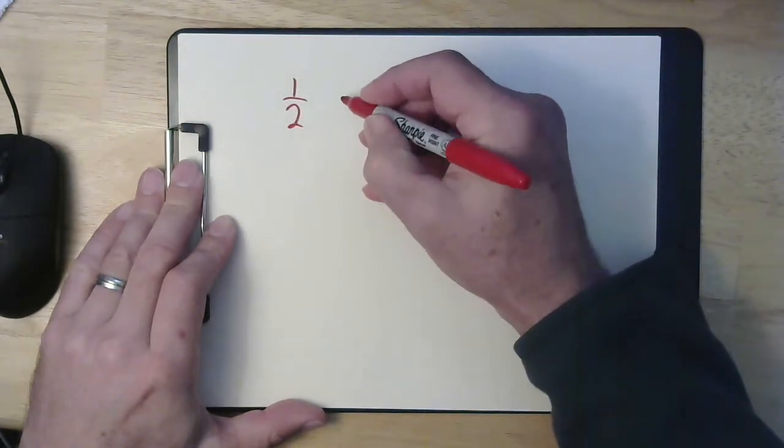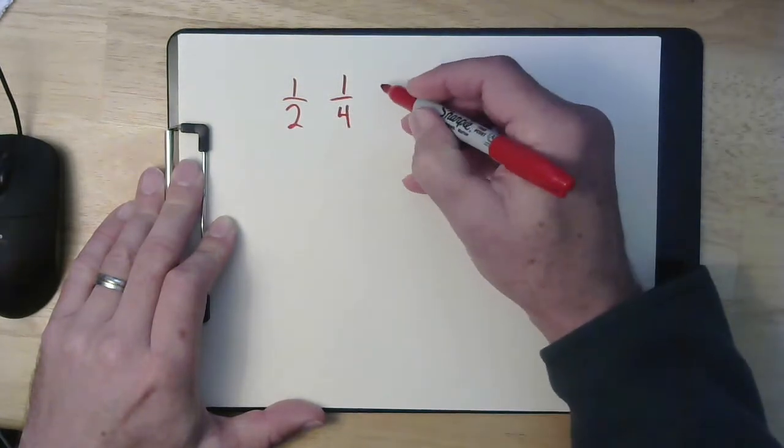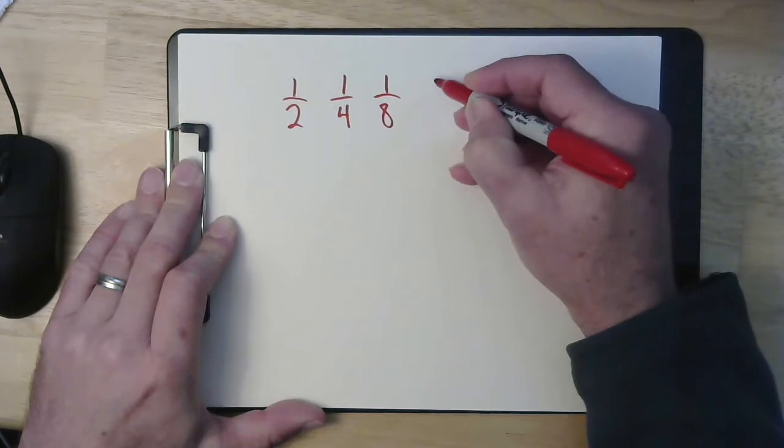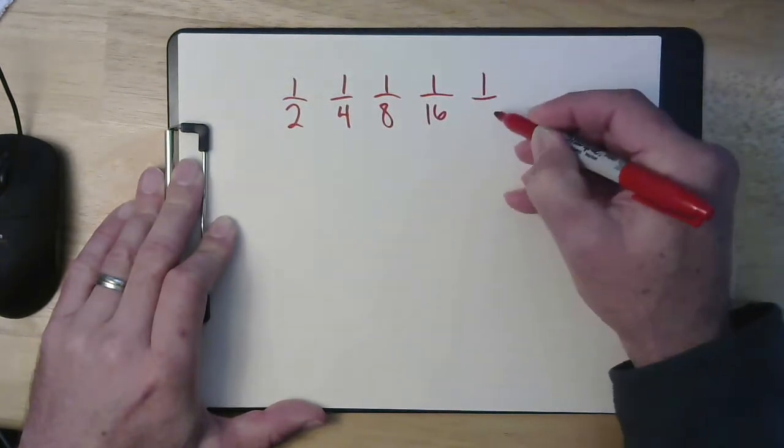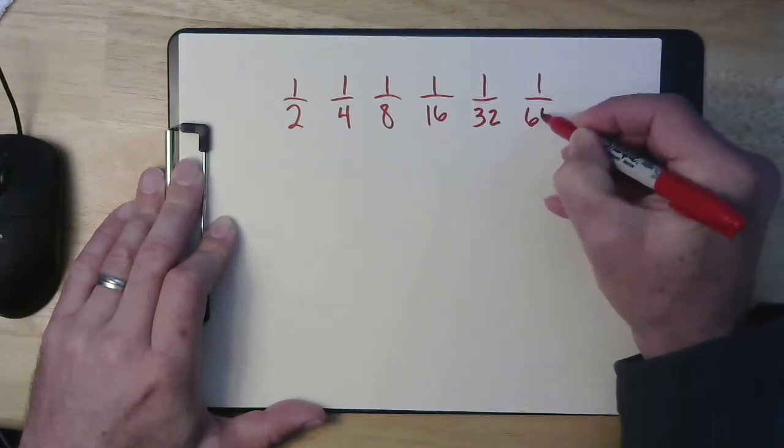So numbers that have a bottom number of 2, so halves, bottom number of 4, fourths, and eighths, sixteenths, thirty-seconds, and maybe sixty-fourths.